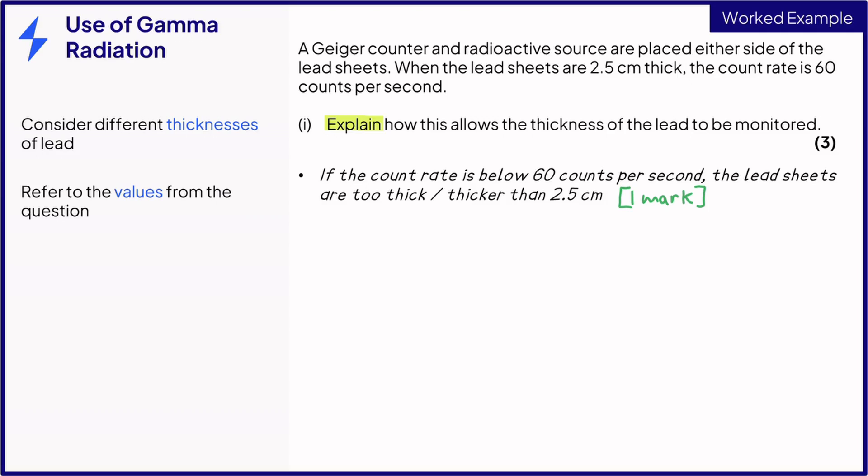Remember, referring to the values in the question will get you a long way in exams, and you need it for the mark here. If the count rate goes above 60 counts per second, then the lead is too thin. This is the second mark. State the obvious in your exam. Don't just assume that this is implied by your first sentence.